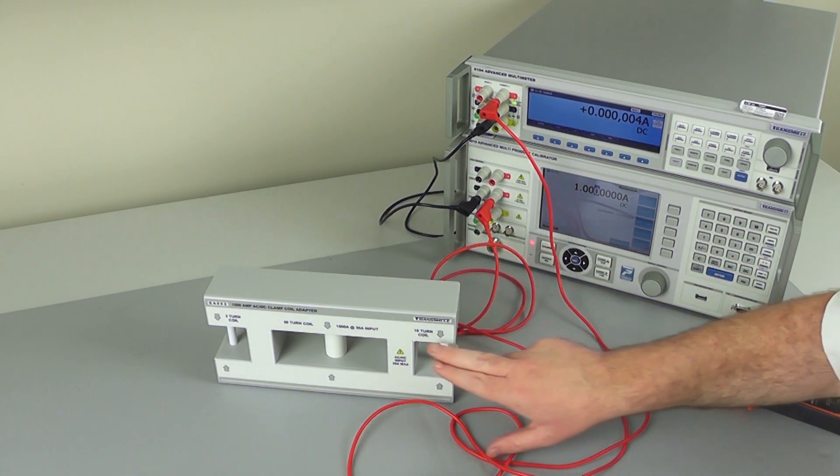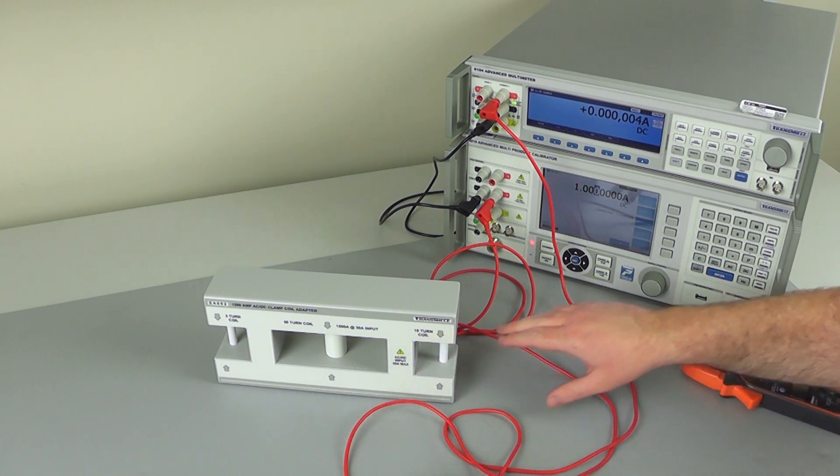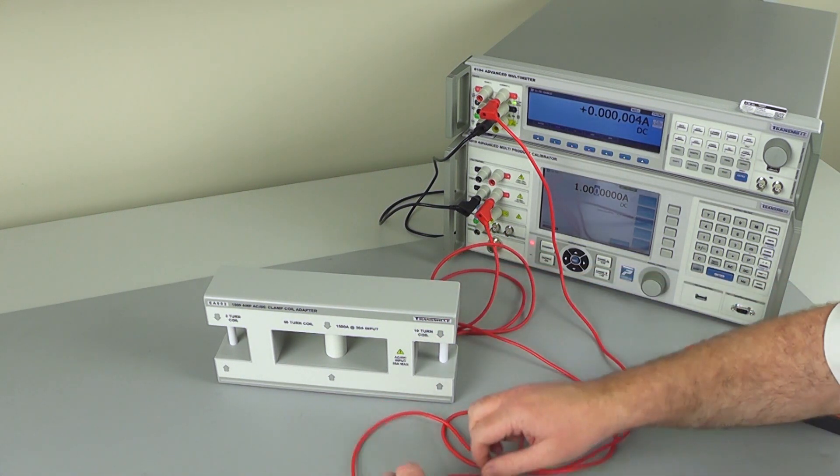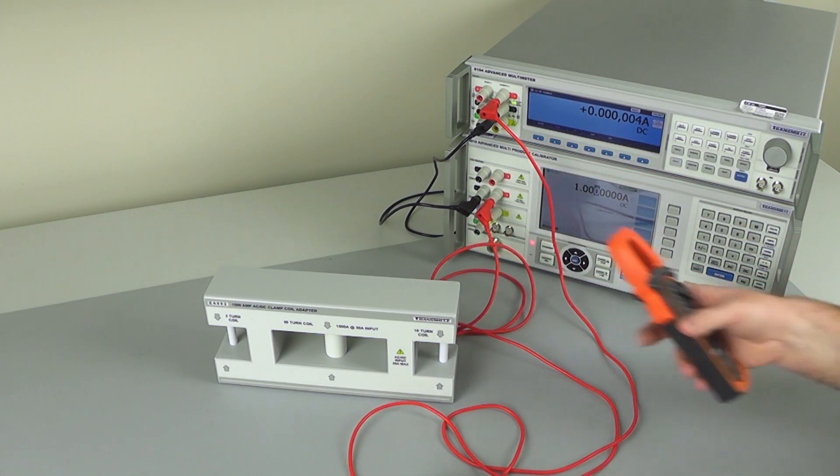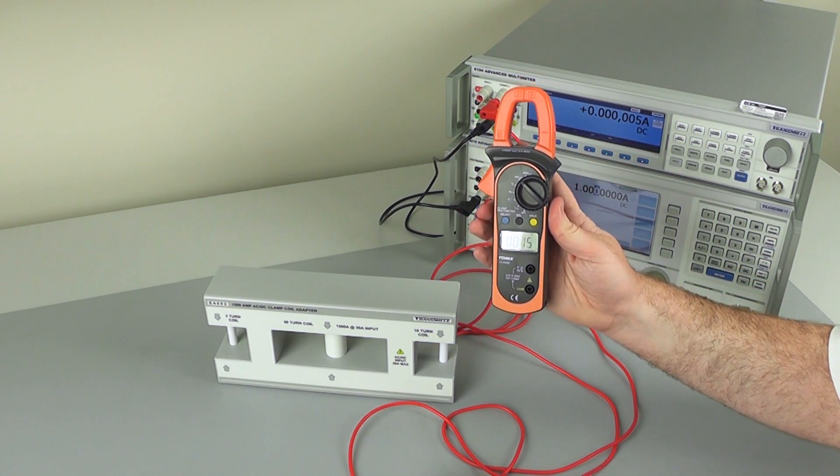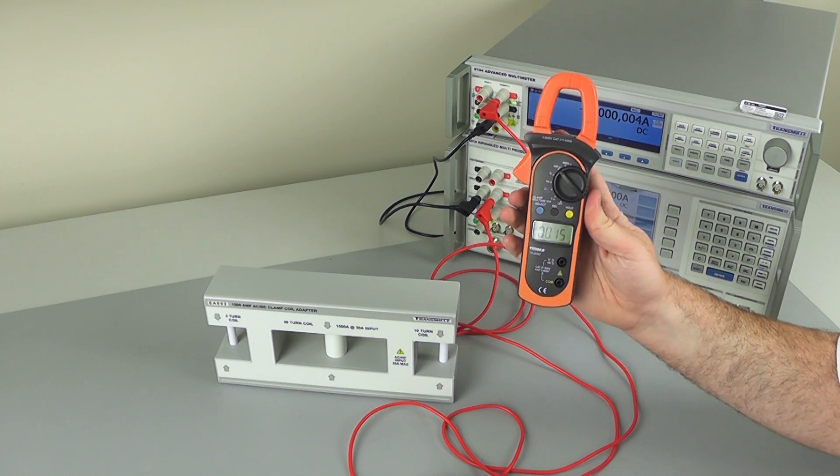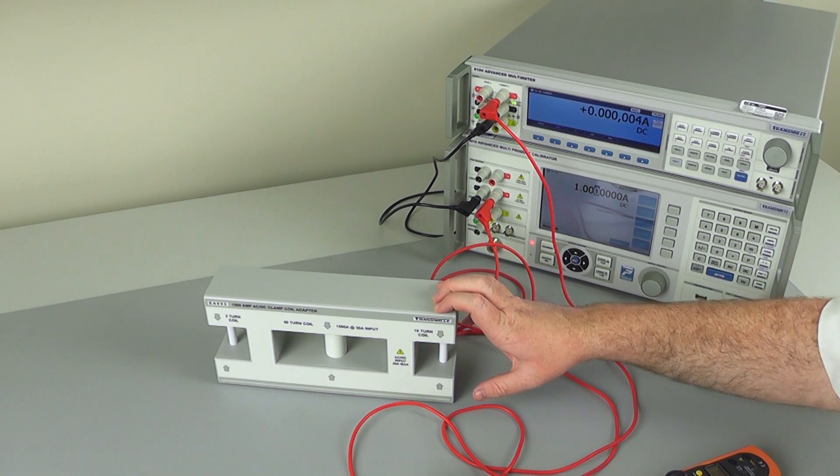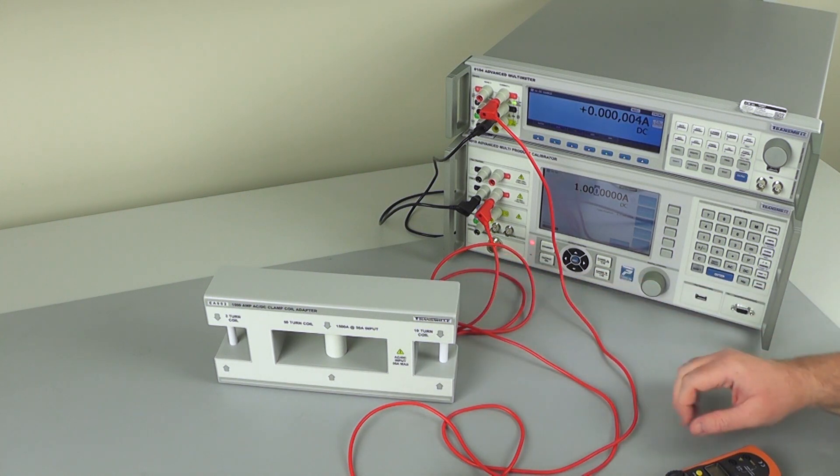So for example, to verify the 10 turn coil, you would pass 1.9 amps through into the coil. And then verify that your clamp meter indicates 19 amps. Once again, it's very clear if the number of turns is incorrect. If you have one too many turns, it will indicate 20.9 amps. So it's very clear, even given the resolution of most clamp meters.